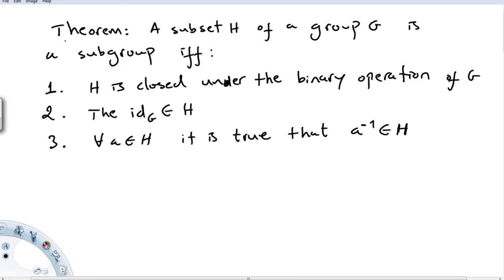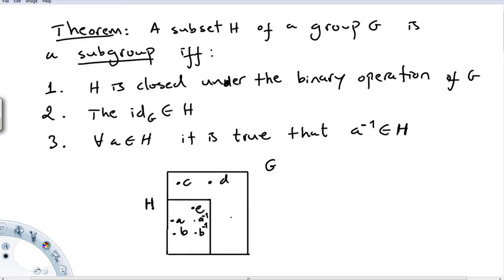Now the true theorem is: a subset H of a group G is a subgroup if and only if: one, H is closed under the binary operation of G; two, the identity of G is in H; and three, for all A in H, the inverse of A is also in H.